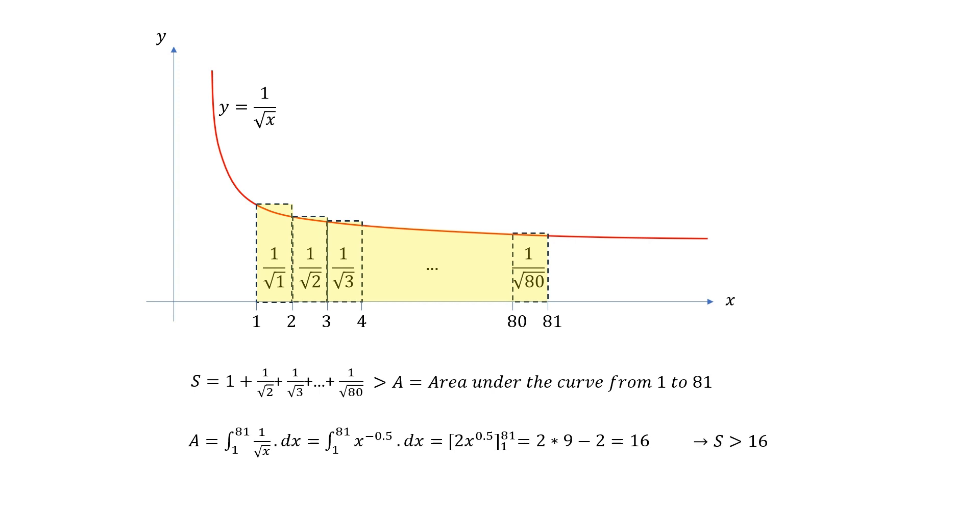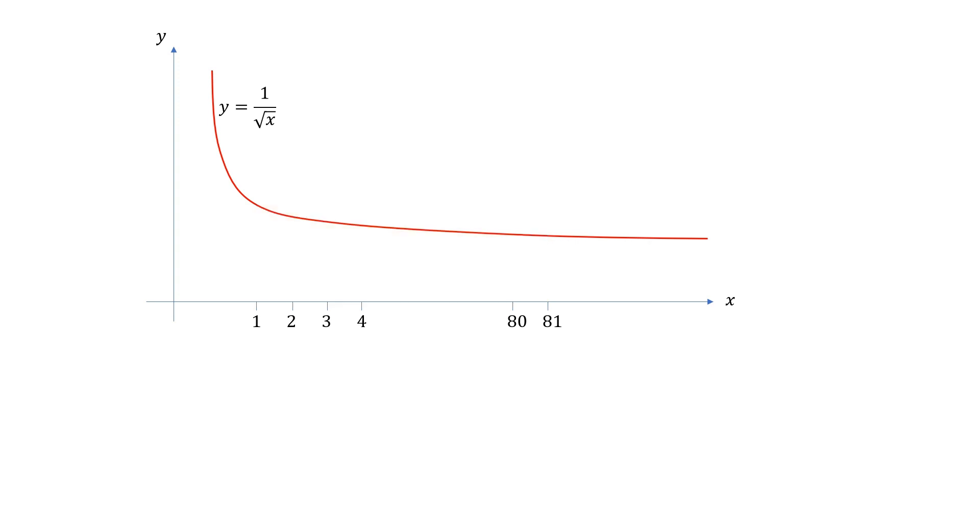Now let's prove the other side of the inequality. This time we're going to consider the first rectangle like this. The height is 1 over root 2 and the width is again 1. The next rectangle is 1 over root 3.